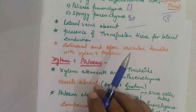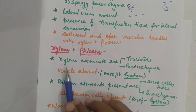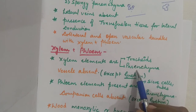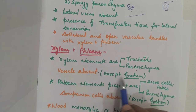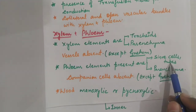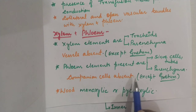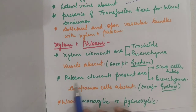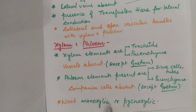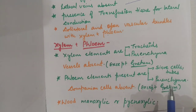Regarding xylem and phloem in root, leaves, and stem: xylem elements are tracheids and parenchyma — vessels are absent except in Gnetum. In phloem, sieve tube cells and sieve cells are present, along with phloem parenchyma — companion cells are absent except in Gnetum. The wood is manoxylic or pycnoxylic. This concludes the anatomical characters of gymnosperms; in the next lecture we will study the reproductive characters.